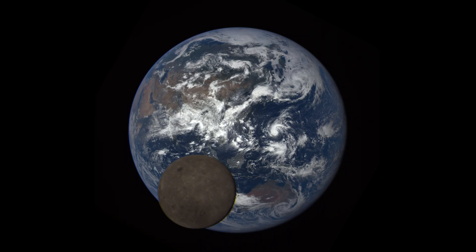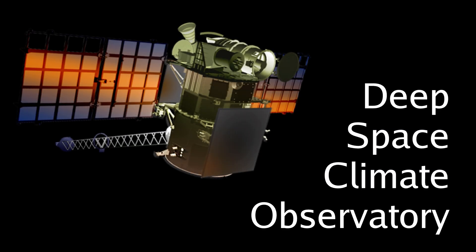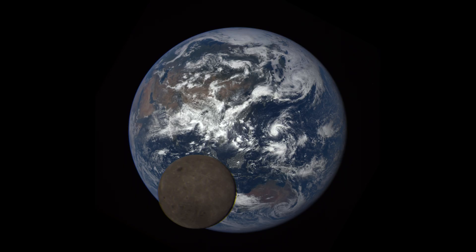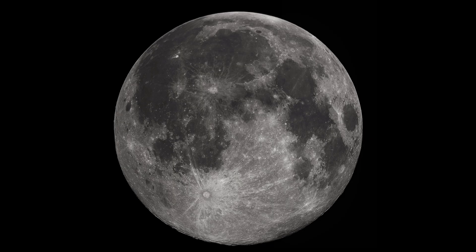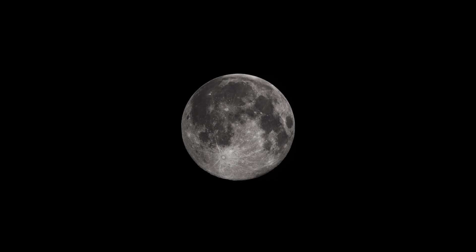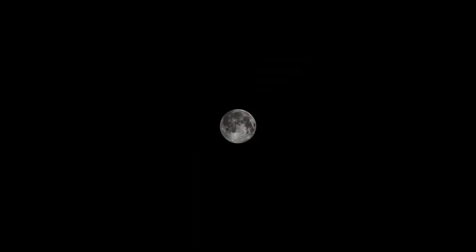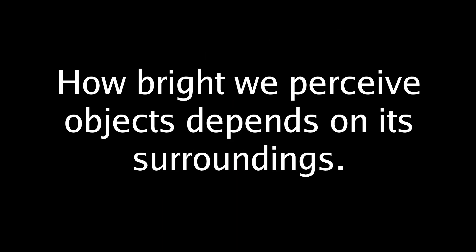Here is a photograph of the moon passing in front of the Earth as seen by the Deep Space Climate Observatory. The moon looks darker than Earth. If the moon is grey, why does it look vibrant white at night? Maybe the moon looks bright because at night it is surrounded by the pitch black sky. Our brains can perceive the brightness of objects differently depending on their surroundings.